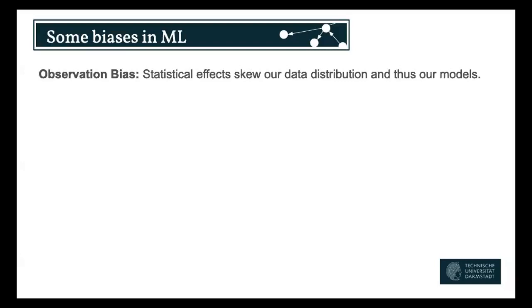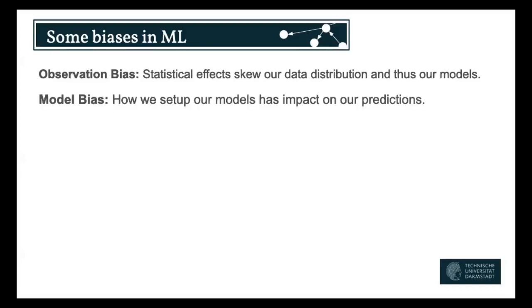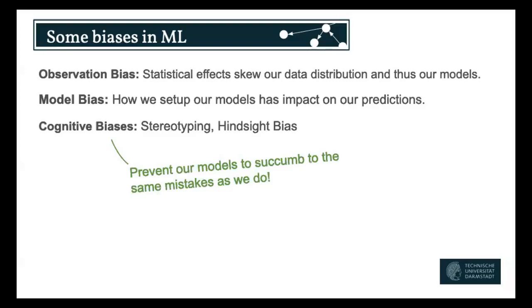There are a lot of biases and I'll list just a few. In machine learning, the most observed bias is observation bias — we have a data set or observations that are skewed in some sense. Maybe we only observe positive examples, or in medicine, only a certain type of patient reports back to us. Choosing the right model is also important. We also have cognitive biases like stereotyping and hindsight bias, which will be included in our data sets, so we want to prevent our models from following our mistakes and biases.